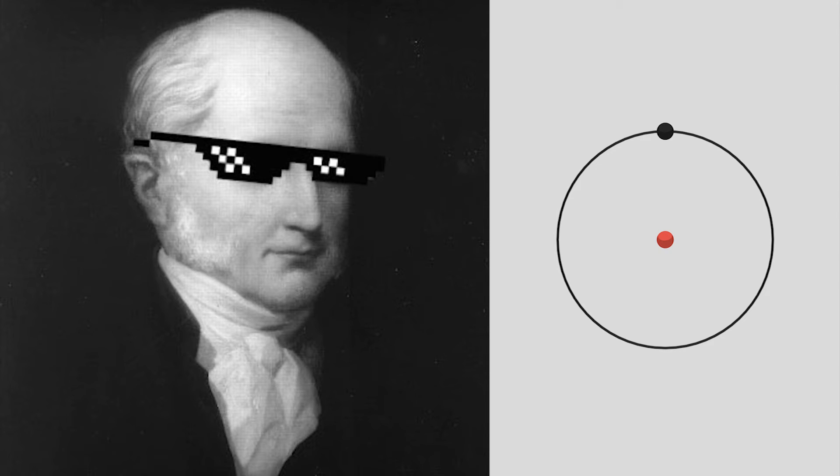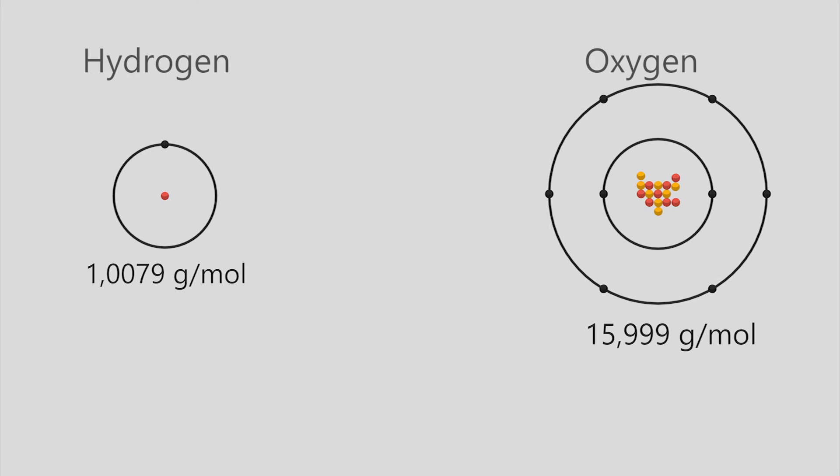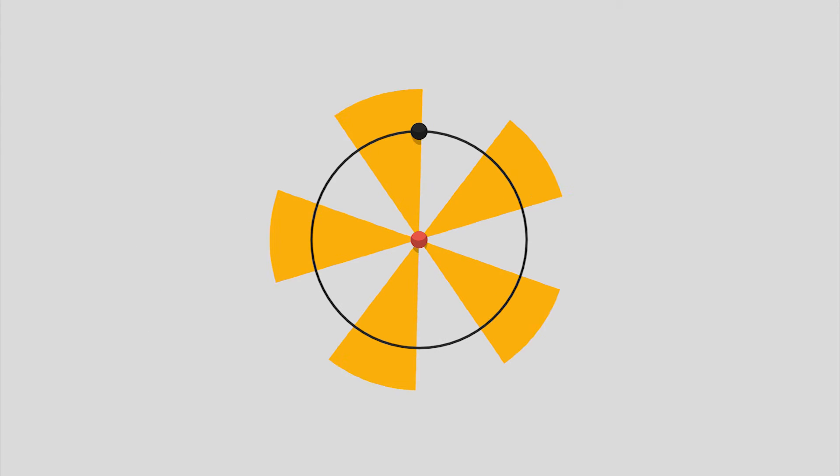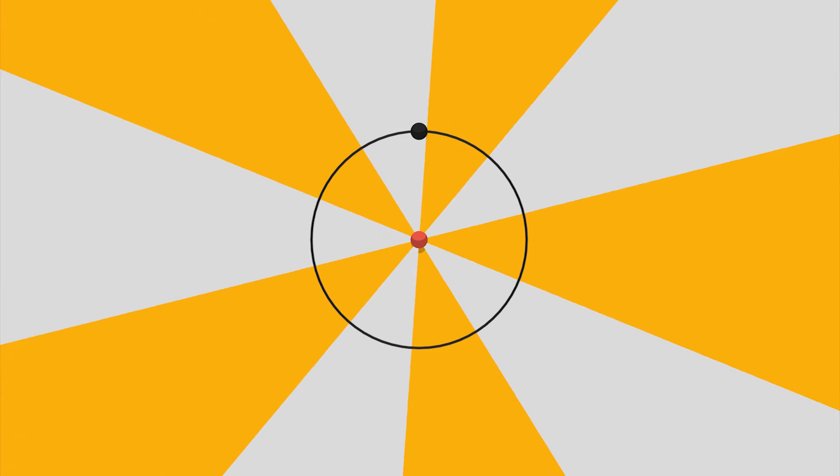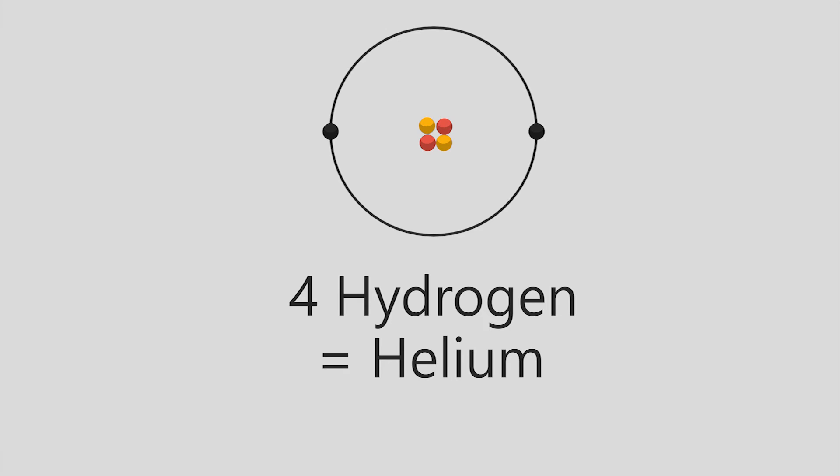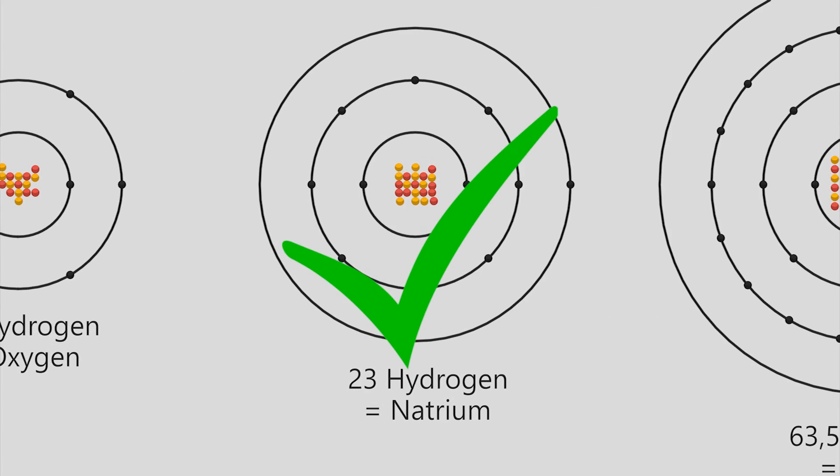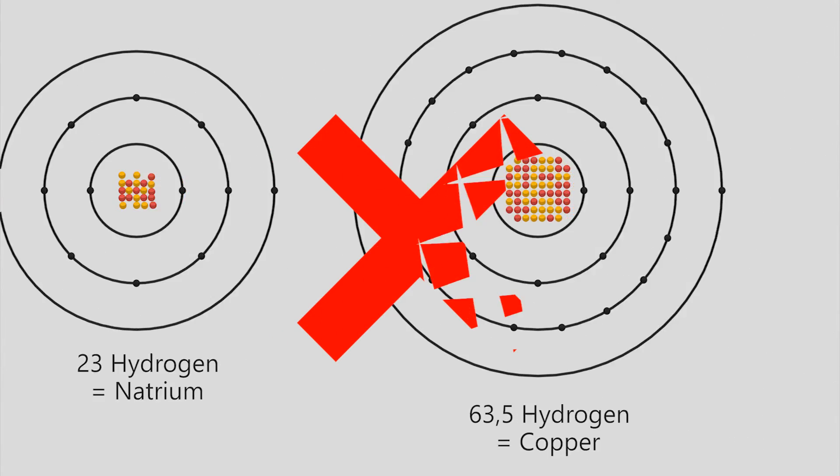William Prout suggested that everything was made up from hydrogen. He saw that, for example, oxygen weighed almost the same as 16 hydrogen. So he thought that hydrogen was the true fundamental object and he called hydrogen a protyle. Almost all of the known substances at the time followed this rule that the weight was always n times hydrogen.